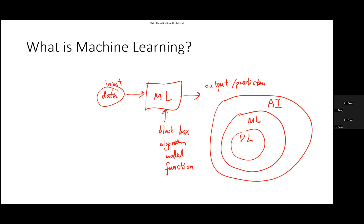We also hear about reinforcement learning. So we have supervised learning, unsupervised learning, and reinforcement learning — these three are the different types of machine learning algorithms. Supervised learning is the most common task we will spend a lot of time on. Reinforcement learning is more advanced and growing very fast in terms of research and attention.